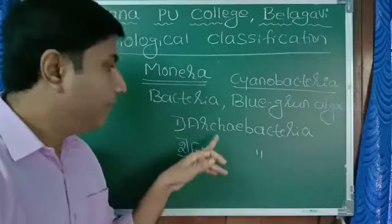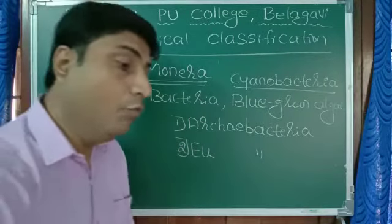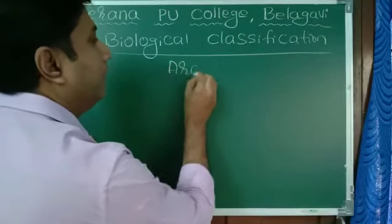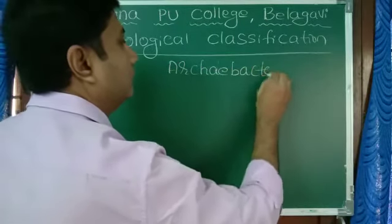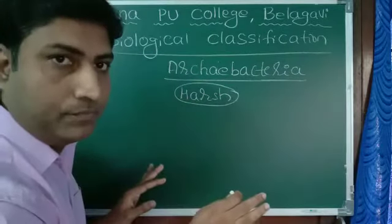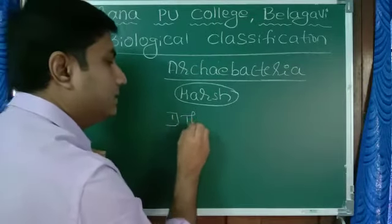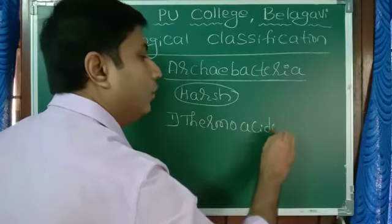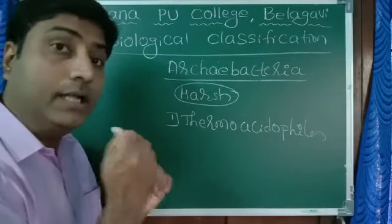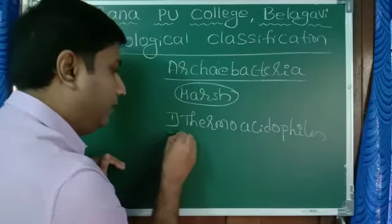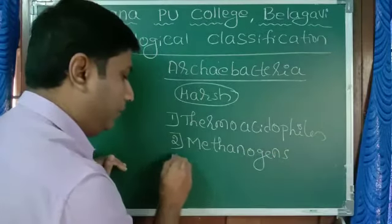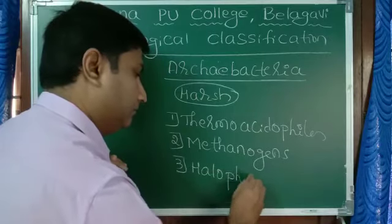Eubacteria are the true bacteria. Whereas Archaebacteria are the special type of bacteria which live in very harsh condition. Archaebacteria live in very harsh condition where no other organisms can live. And based on that some of the examples: one set is thermoacidophiles. Second one, methanogens. And third one, halophiles.